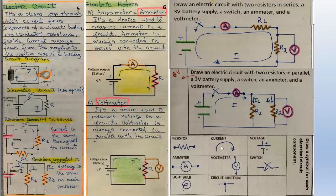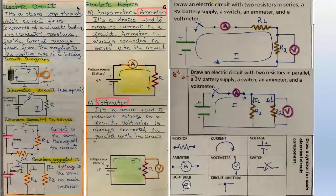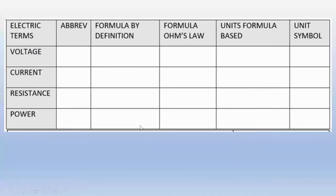A summary of electrical circuit component symbols: a resistor is usually shown as a zigzag (some programs use a box). Current can be a straight or curvy arrow. DC voltage is the two parallel lines. A switch, voltmeter, and ammeter each have their own symbols. A circuit junction is where current splits. A light bulb has its own symbol. In the summary table we have abbreviations, formulas by definition, formulas by Ohm's law, units, and symbols for voltage, current, resistance, and power.